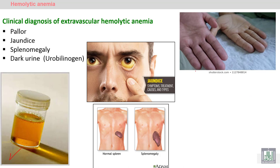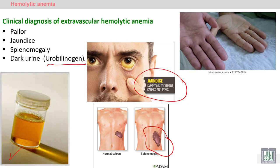In the clinical diagnosis of extravascular hemolytic anemia, we can see general features of anemia such as pallor, and specific features including jaundice due to release of bilirubin in the blood, splenomegaly — an enlarged spleen — due to excessive destruction of red blood cells by extravascular organs like the spleen or liver. Sometimes we can also see hepatomegaly and dark urine due to increased urobilinogen in the urine, seen as a dark yellow color of the urine sample.